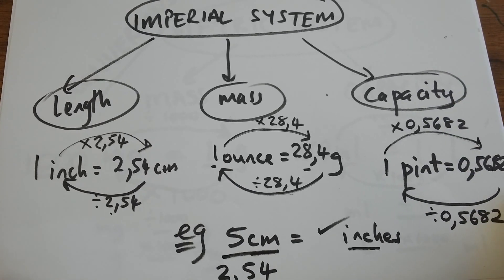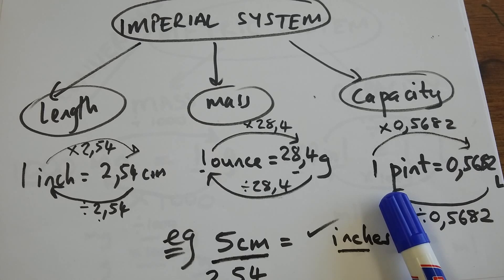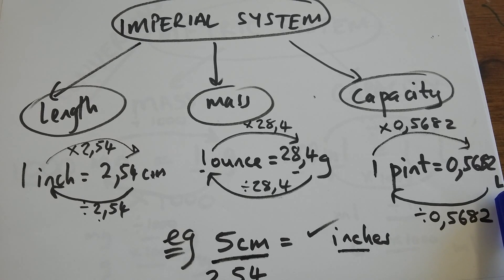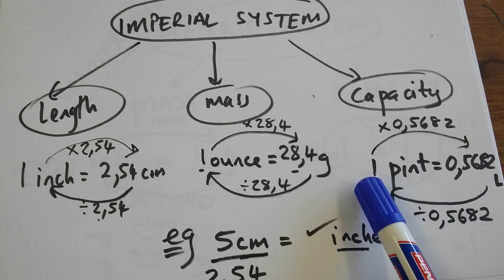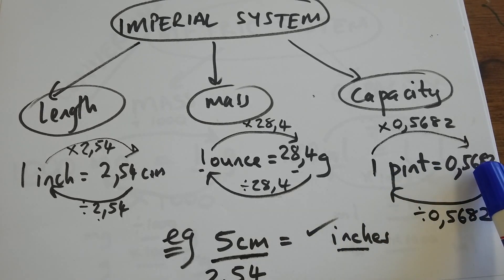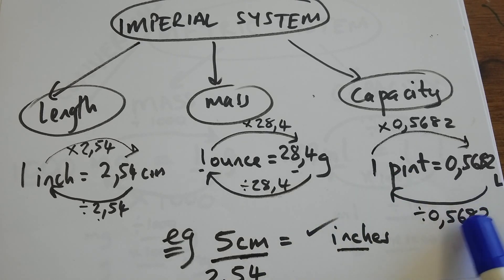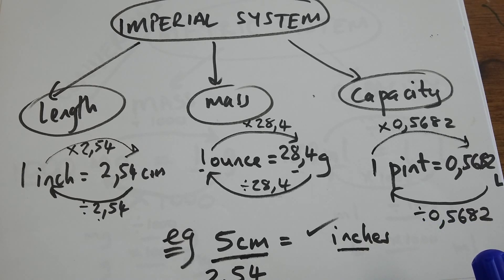Under capacity, we will look at pints and liters. From my conversion table: one pint is equal to 0.5682 liters. When converting from pints into liters, I multiply. When converting from liters back into pints, this number becomes a one — the only way that's possible is dividing it by itself — so when converting from liters into pints, I divide by 0.5682.